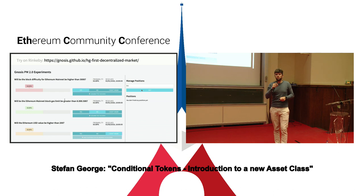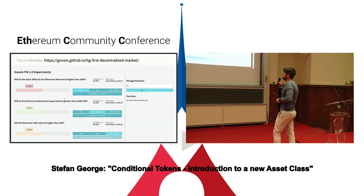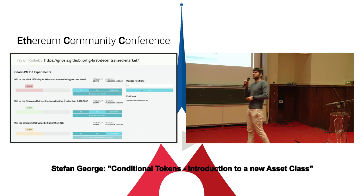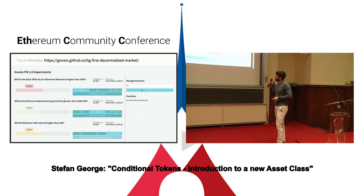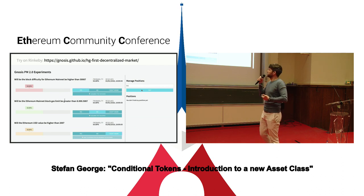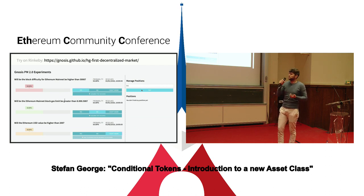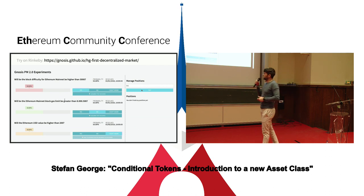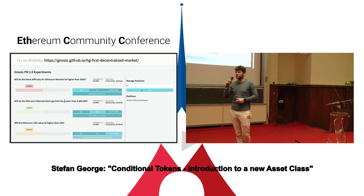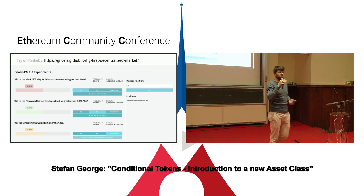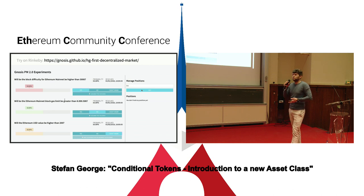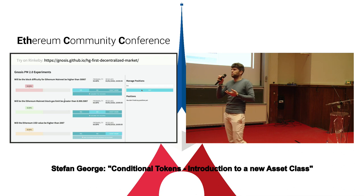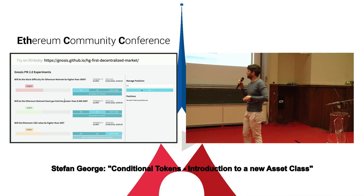It's available on GitHub and of course open source, so we are happy if you take a look and try it out. We also have implemented a concrete example. Here we have one experiment that we want to run on Mainnet very soon. We have three markets: a market on the Ethereum difficulty, a market on the Ethereum block gas limit, and a market on the Ethereum USD price. The assumption is that those markets correlate, and now because we have this new system we can actually see how they eventually correlate by how much people are trading on those markets.